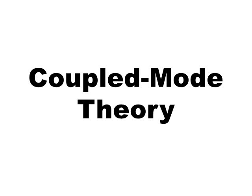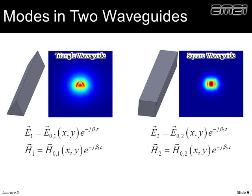Now we're ready to move into coupled mode theory. It's easiest to start by talking about modes in two different waveguides — eventually we will couple these. These don't have to be similar waveguides; we can couple energy from a microstrip into a dielectric waveguide. Here I'm drawing a triangular waveguide and a rectangular waveguide. In general, we write the mode solution for each as an amplitude function in the cross-section times how it propagates in the z-direction, for both electric and magnetic fields.